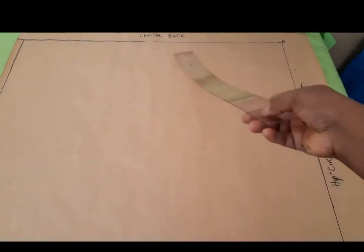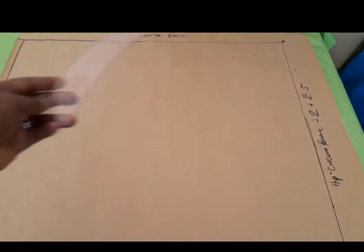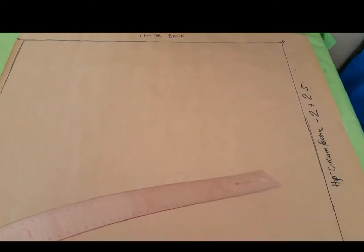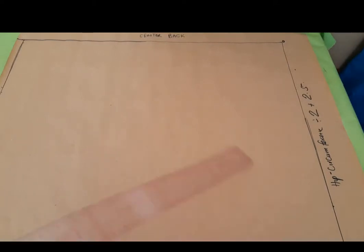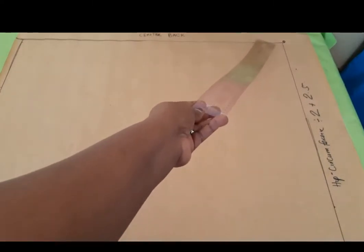First of all, cut your pattern paper and place it on the table. Draw a rectangular line. This part of the line is your hip circumference divided by 2 plus 2.5 centimeters, if you are using the centimeter tape. This part of the line is your full length — from your shoulder up to your hips. Ensure that you tape your pattern paper on your table. Our starting point is here, marked zero.